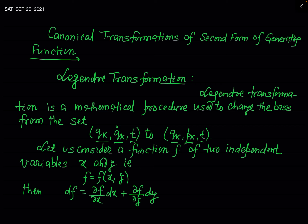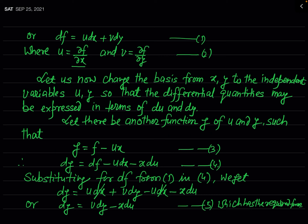To understand the concept of Legendre transformation, let us consider a function f, which is a function of two independent variables: x and y. So f = f(x, y). Since f is a function of x and y, we can find the differential change in f: df = (∂f/∂x)dx + (∂f/∂y)dy. Now let us substitute u = ∂f/∂x and v = ∂f/∂y, so that df = u dx + v dy.